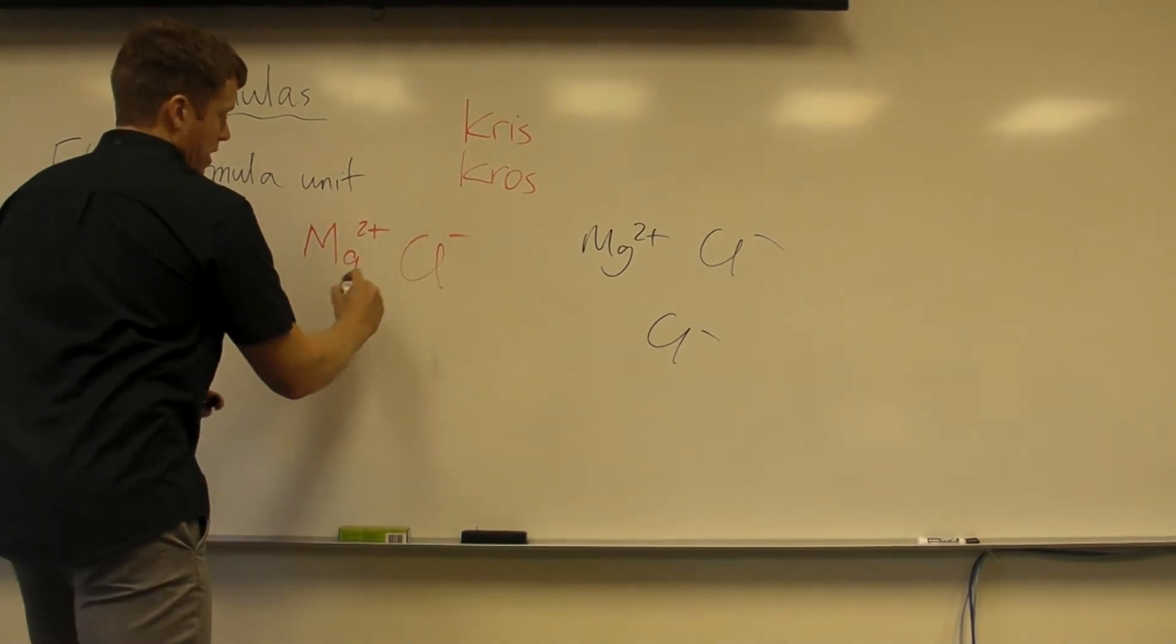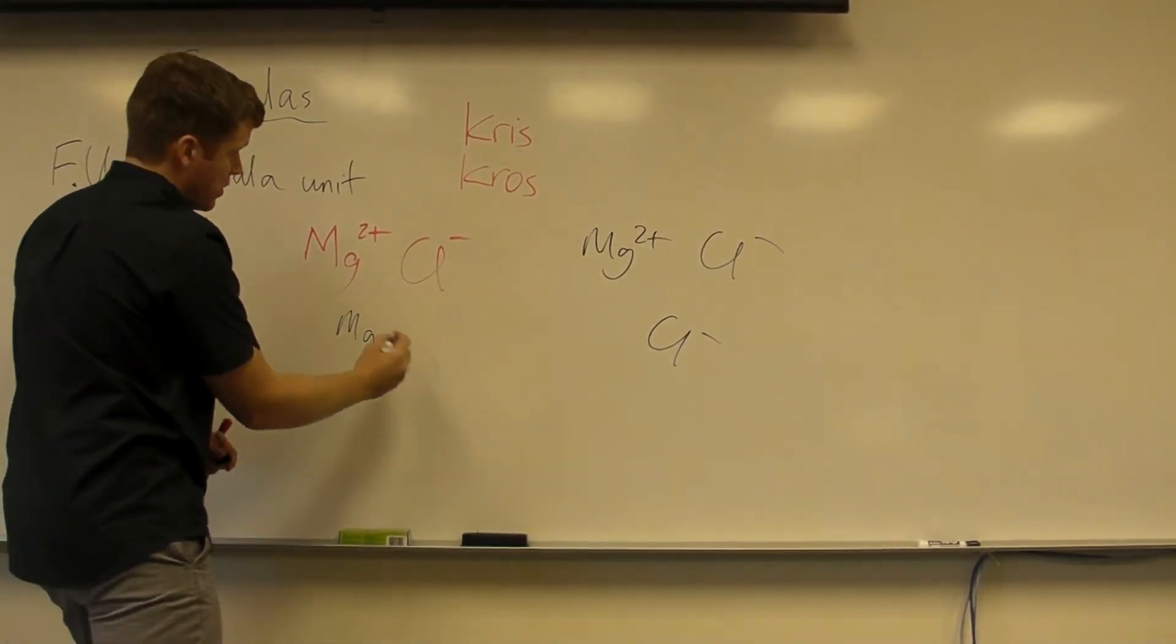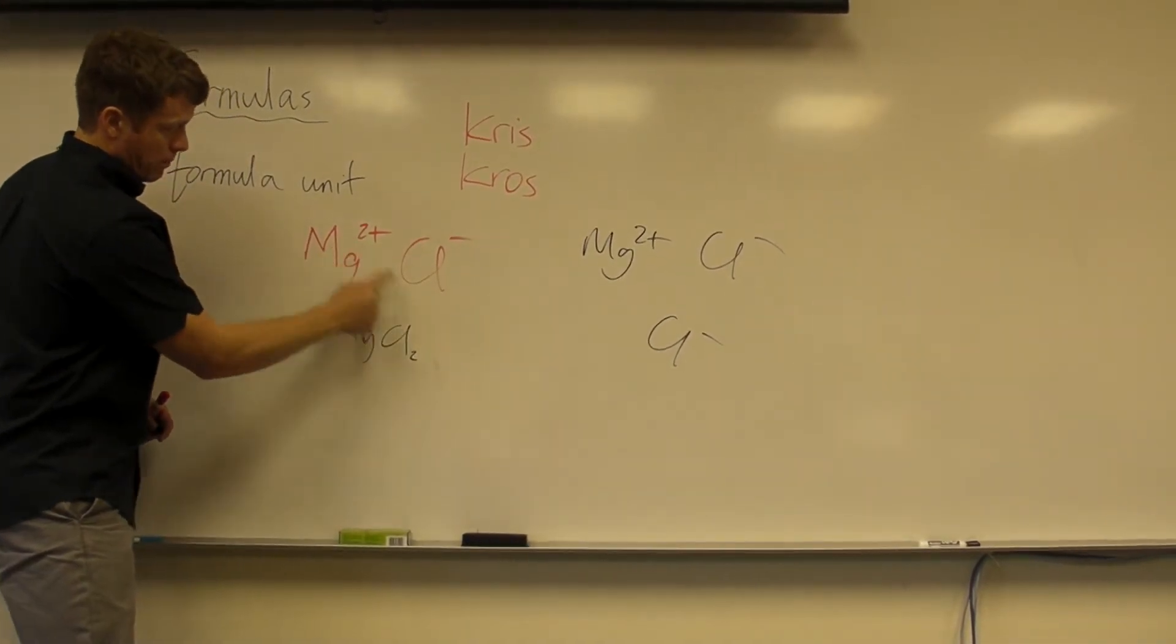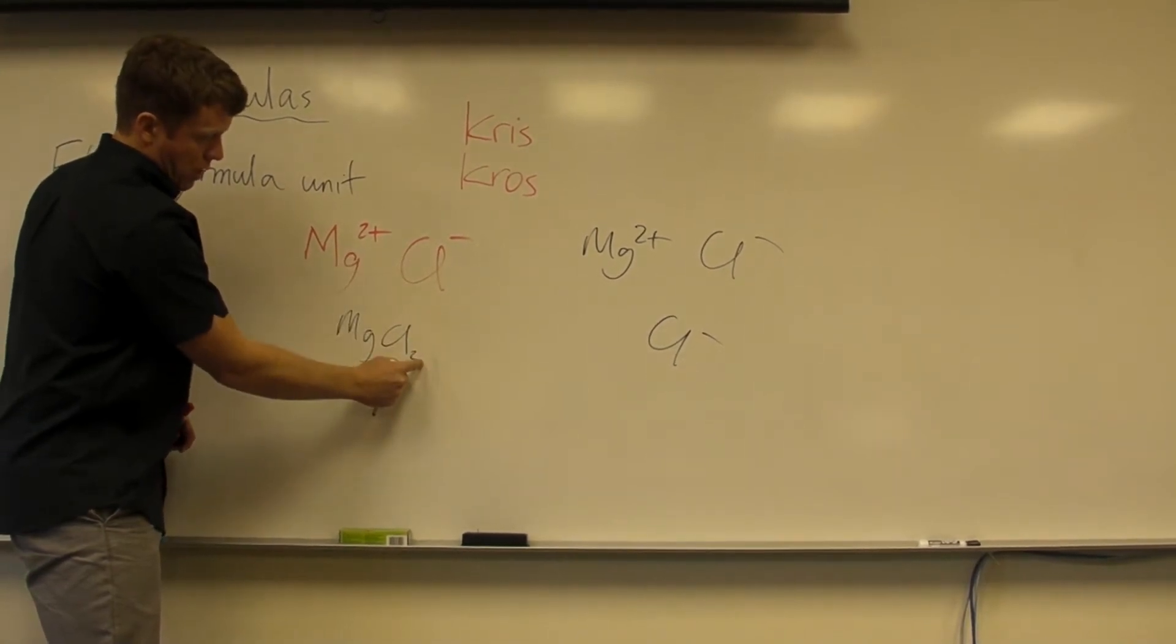The shortcut crisscross version is to say, I can just bring this one down here, but I don't need to write the one, it's invisible. And then this two would go with the chlorine, so crisscross, so the one comes here, and the two goes here.